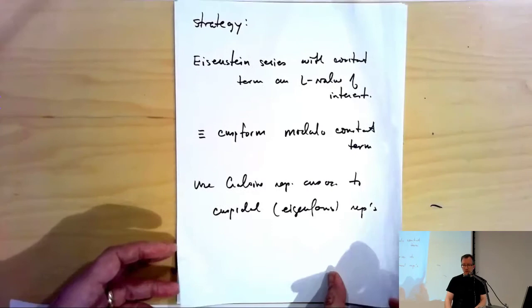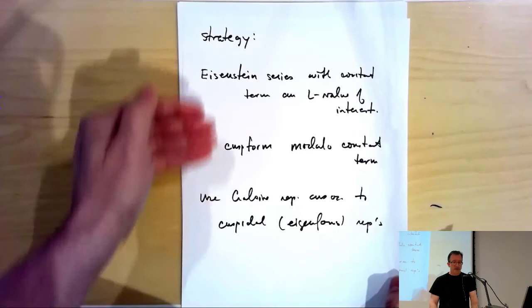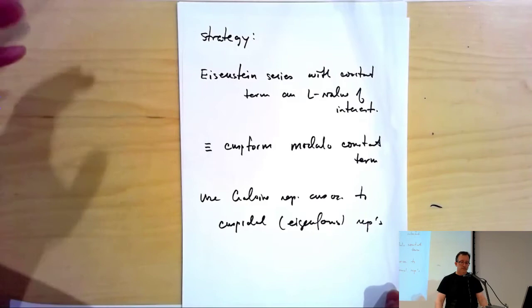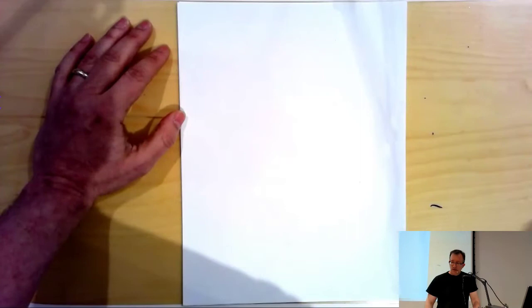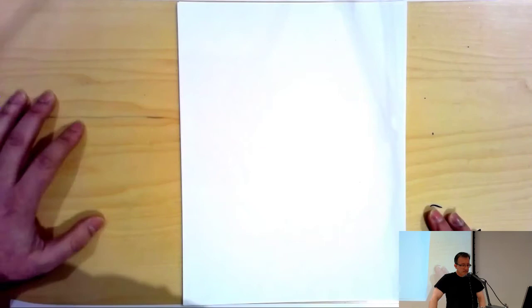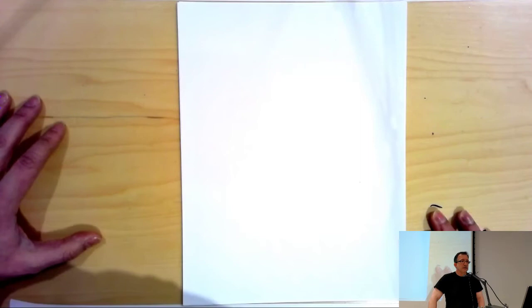What Eric Urban and I did was basically the same strategy, but for an Eisenstein series whose constant term now sees the L-function of the elliptic curve. There's a well-developed theory of Eisenstein series going back to work of Langlands, and in fact it was by studying Eisenstein series and their constant terms that Langlands even came up with the notion of an automorphic L-function.